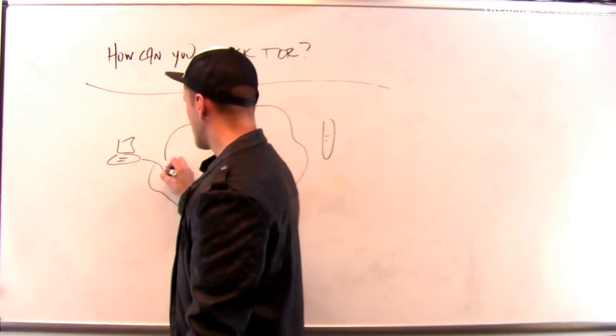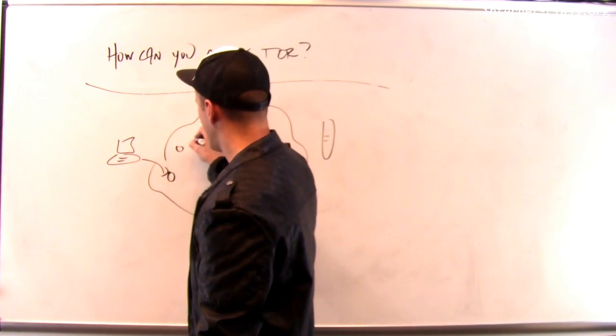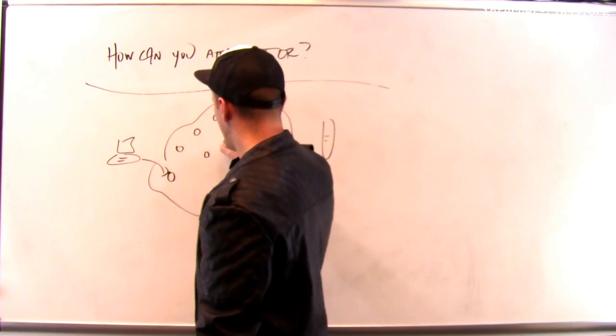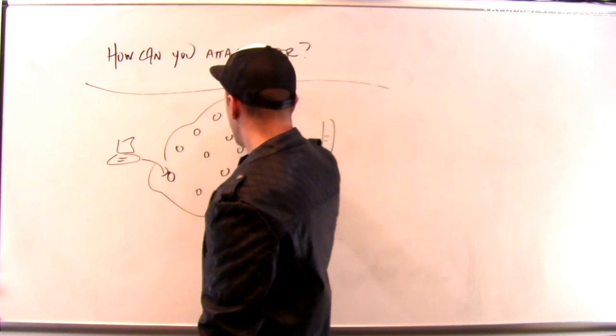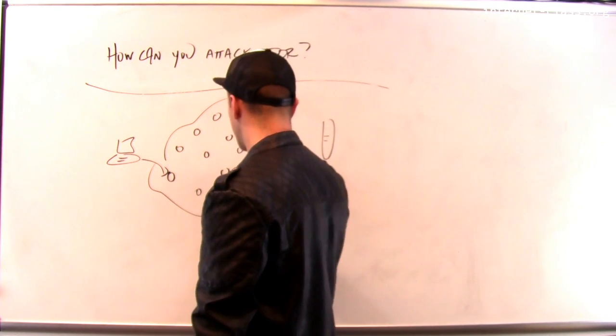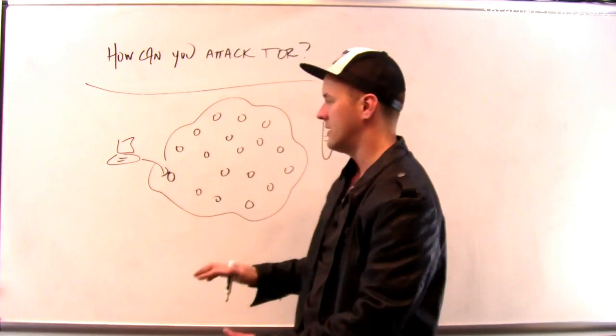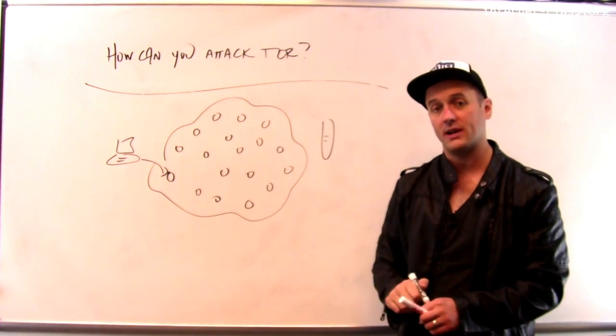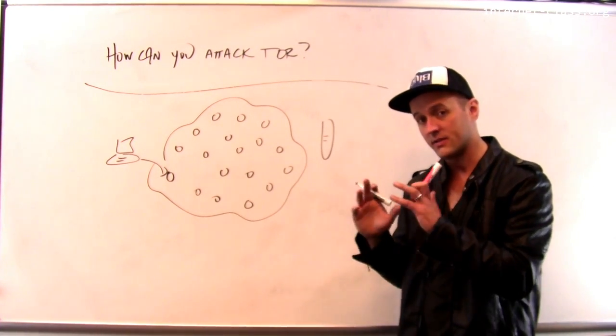What does Tor do? Tor uses this large network of computers or relays to anonymize traffic when people are trying to keep their internet activities secret.